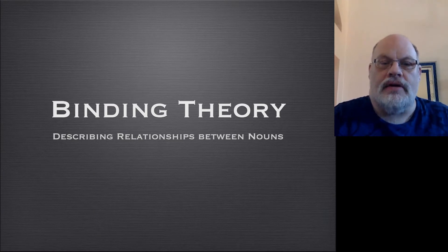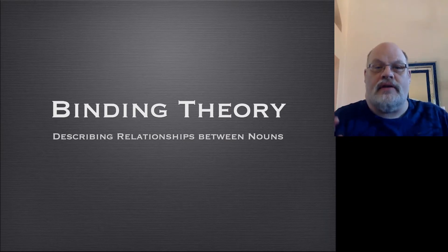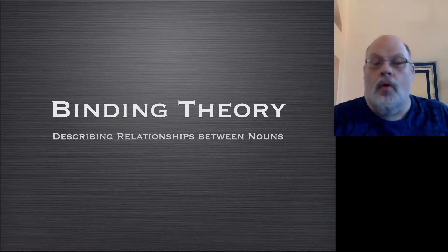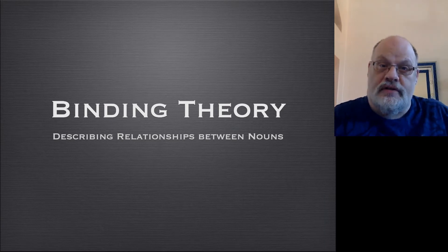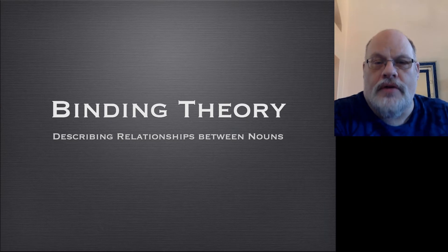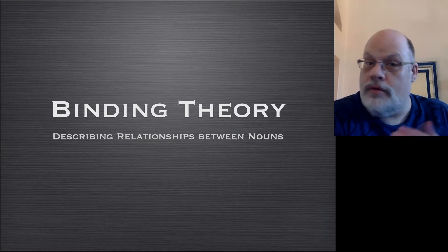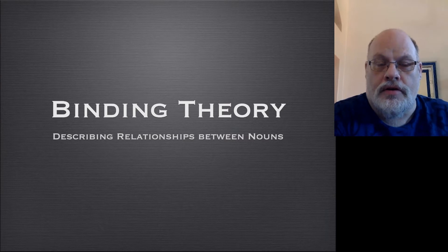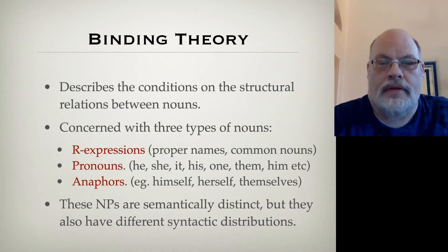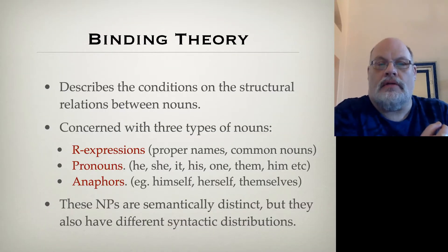The binding theory describes relationships between nouns in the sentence — relationships where one noun might refer to the same entity as another. We discover that there are in fact structural conditions on those kinds of relationships. When you have two nouns that refer to or do not refer to each other, they often have to be in particular syntactic configurations, which we can describe using the structural relations we have discussed. In order to talk about this, we have to talk a little bit about different kinds of noun phrases.